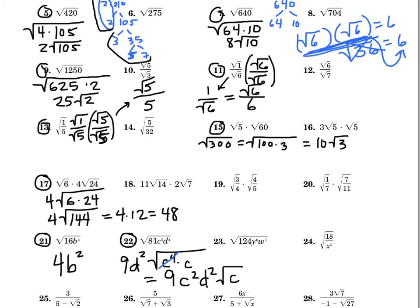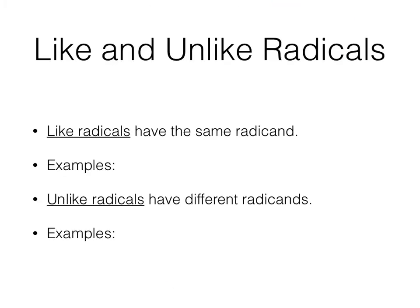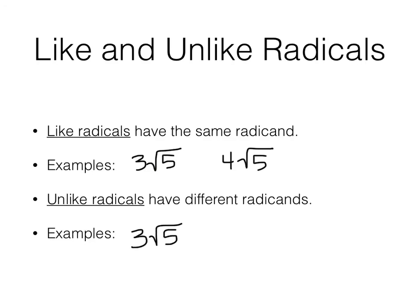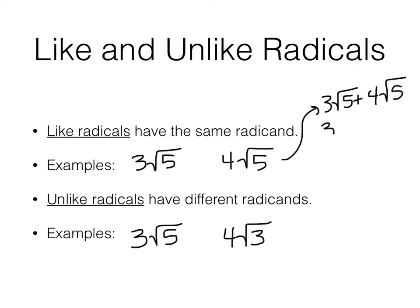All right, that's it for practicing with the radicals. Let's look at simplifying expressions with radical terms. Like and unlike radical expressions: like radicals have the same radicands, unlike radicals have different radicands. For example, 3 root 5 and 4 root 5 are like radicals. But 3 root 5 and 4 root 3 are not like radicals. To add 3 root 5 and 4 root 5, you treat it just like a variable — like saying 3x plus 4x equals 7x. So 3 root 5 plus 4 root 5 equals 7 root 5.